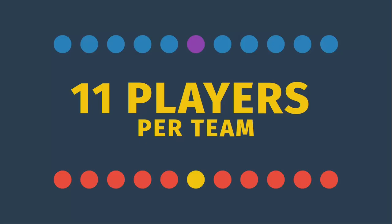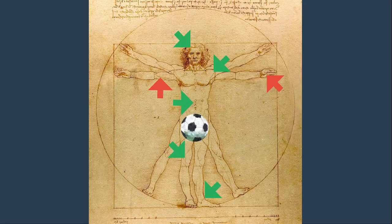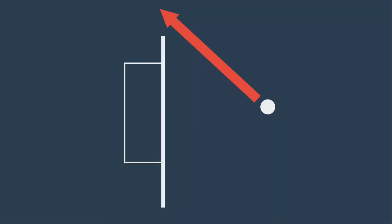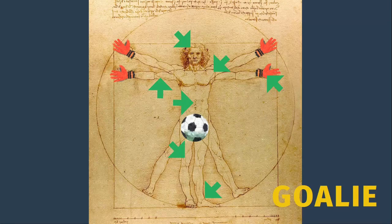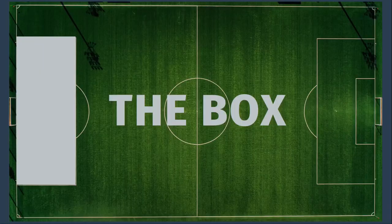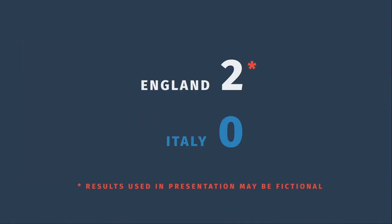Football is played between two teams of 11 players each. The idea of the game is to get the ball into the other team's goal without using your hands or your arms, while stopping the other team from getting the ball into your goal. Each team includes one goalie who can use his hands, but only while he is inside the box. Whichever team has scored the most goals at the end of the match wins.